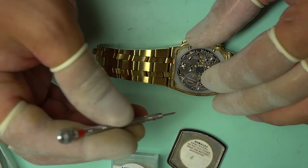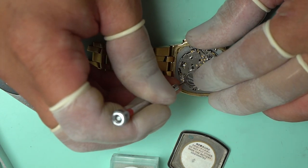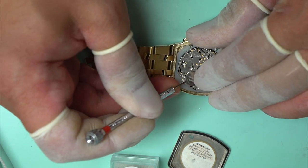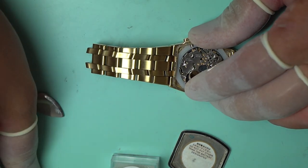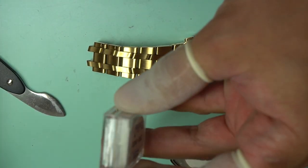Now that the case back is removed, we're going to use a flathead screwdriver to pop out the battery from the movement. This is a rechargeable capacitor that powers by light, storing energy which operates the watch.